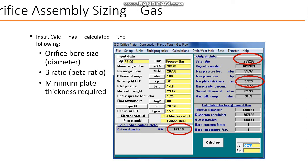As soon as you click on calculate, you can see orifice diameter has been calculated. In millimeters, it is 168.15. Beta ratio is 0.233299, and plate thickness has been calculated as 9.525.